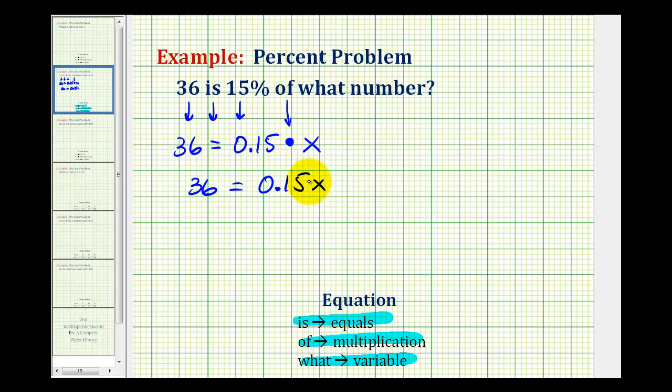Since these are attached by multiplication, we'll divide both sides by 0.15 to solve for x. Notice on the right side, we have x.